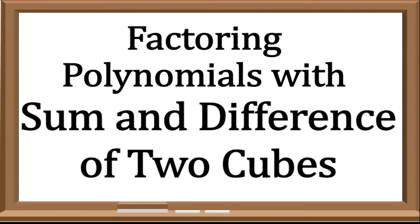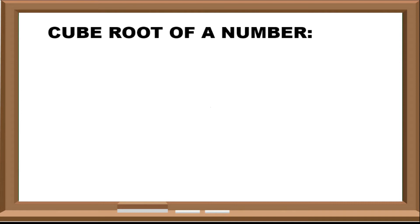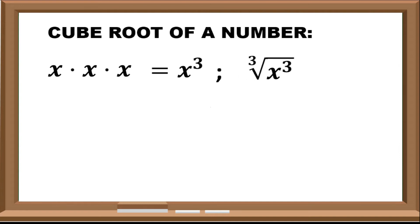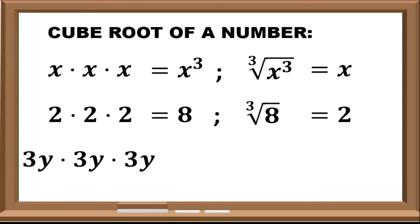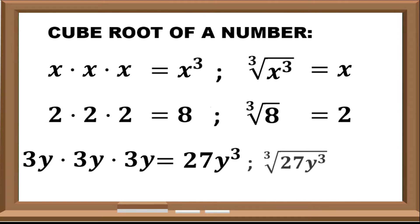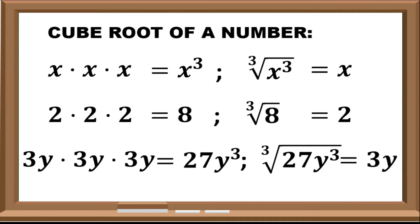But first, we need to go back on some concepts on mathematics such as cube root of a number. As we all know, x times x times x is equal to x cube, and the cube root of x cube is equal to x. As well as 2 times 2 times 2 is equal to 8, and the cube root of 8 is equal to 2. And 3y times 3y times 3y is equal to 27y cube, and the cube root of 27y cube is equal to 3y.